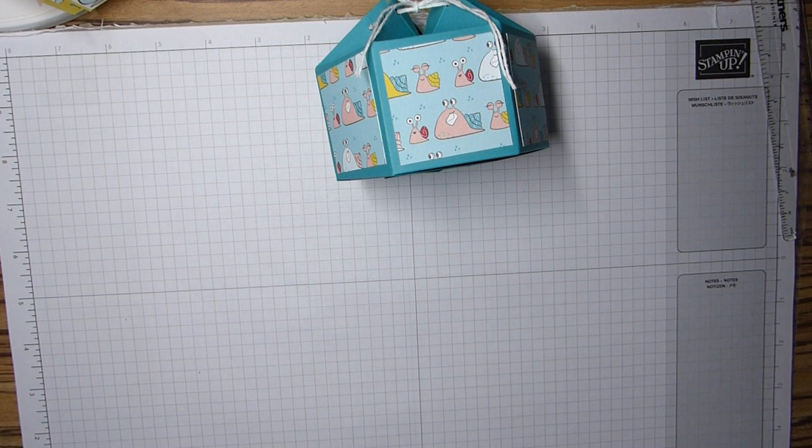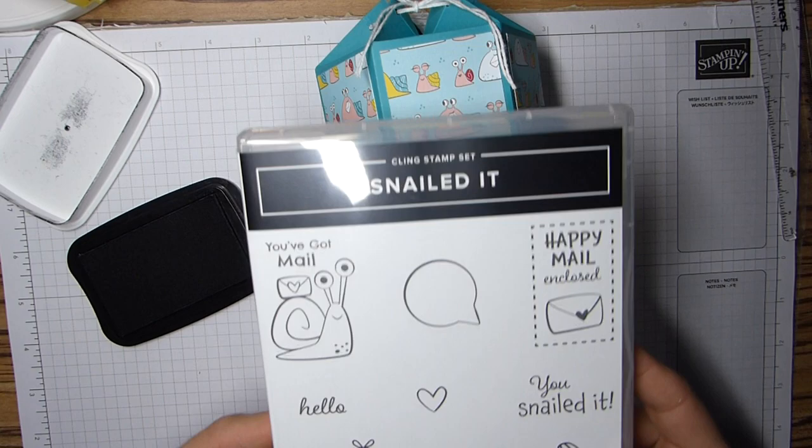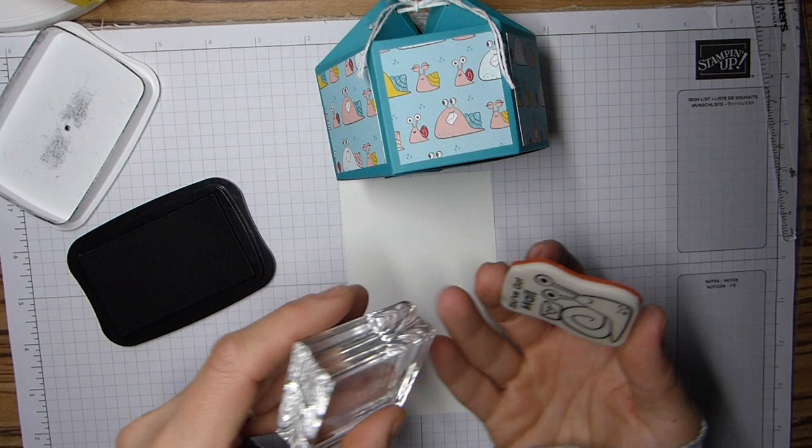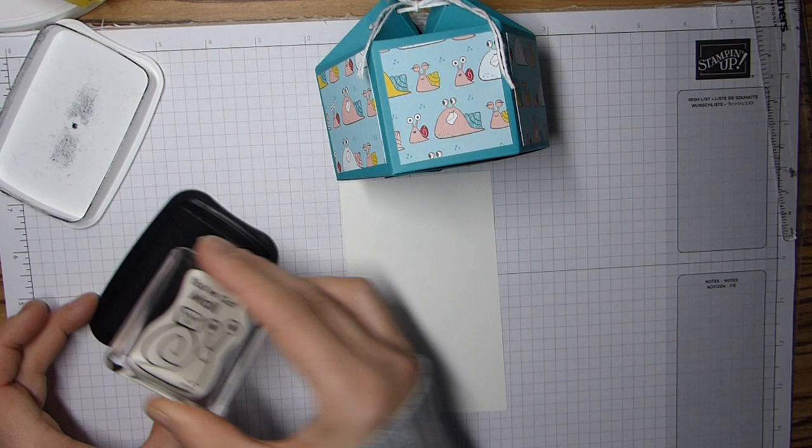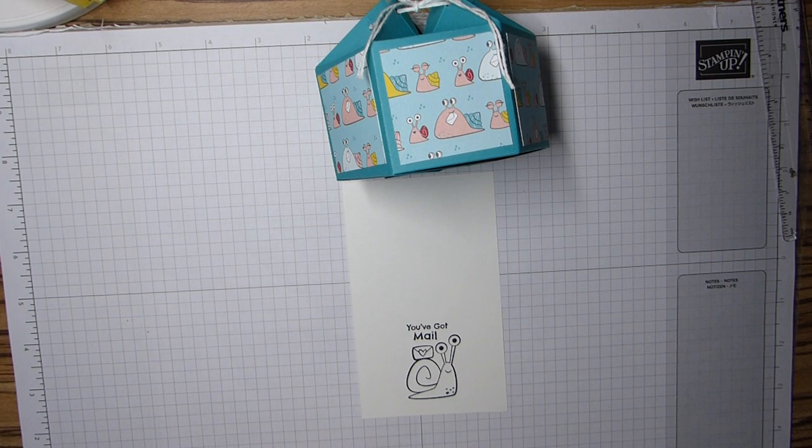So I've got some beautiful whisper white here, my memento, my snail mail stamp set. It's just so cute. You've got mail, going to pop that one up there. I'm hoping it will fit on my C block, yes it will. So leave that stamp. As I say there are coordinating dies, I've just not used them on this project.